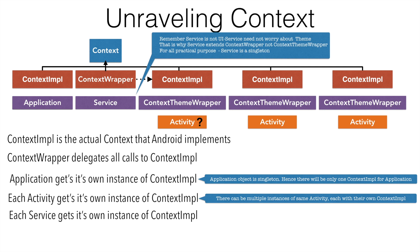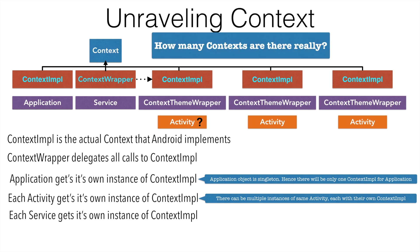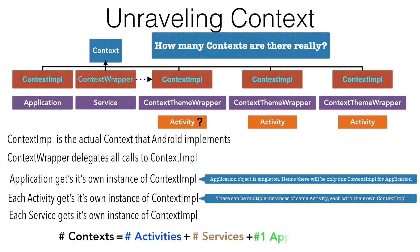Finally, it all boils down to how many contexts do I really have in the application. The total number of contexts in an application is equal to the number of activities plus the number of services, and finally one application context.